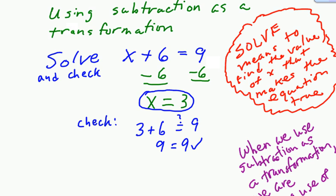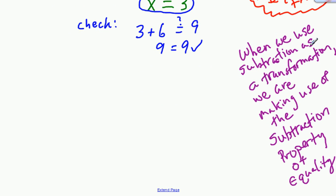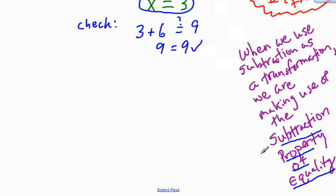When we were using subtraction as a transformation, we were making use of something called the subtraction property of equality. All that property says is that if you subtract the same amount from both sides of an equation, you still have a balanced equation — everything is still equal.